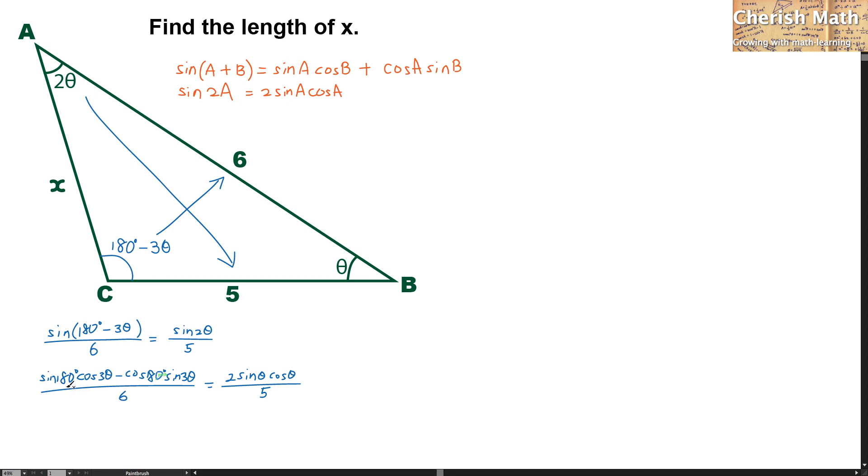Sine 180 degrees multiplied by cos 3 theta is getting 0 because sin 180 degrees equals 0. While cos 180 degrees is negative 1, negative 1 multiplied with the negative here gives positive. So the answer for this part is sin 3 theta divided by 6 equals 2 sin theta cos theta divided by 5, and it is much simpler now.